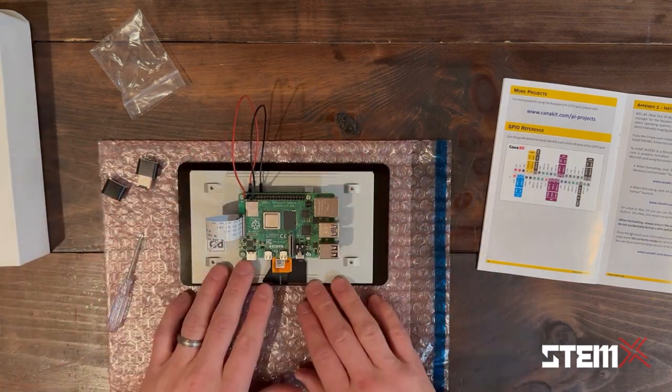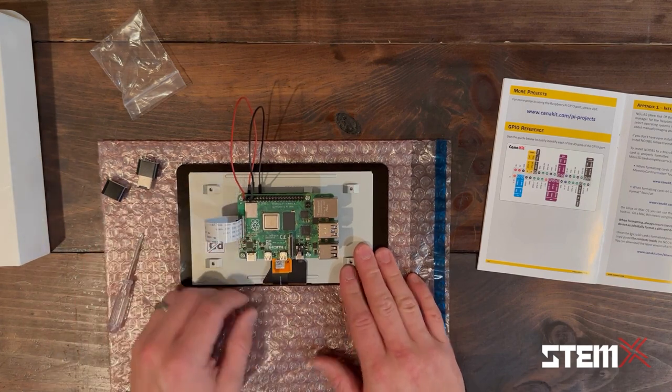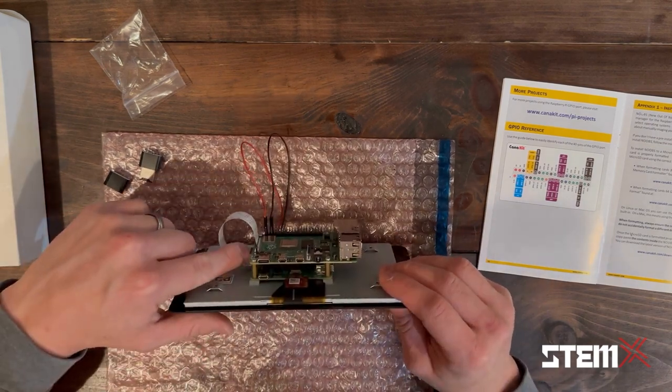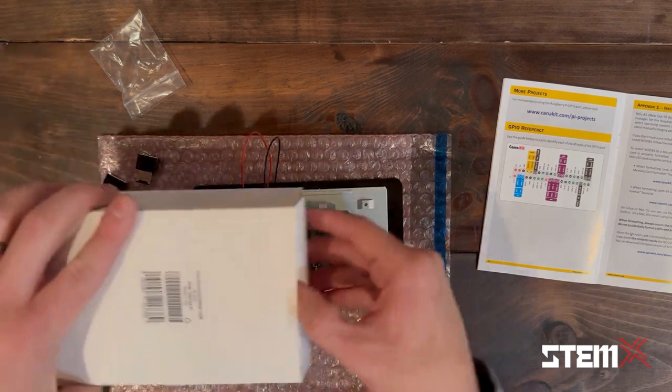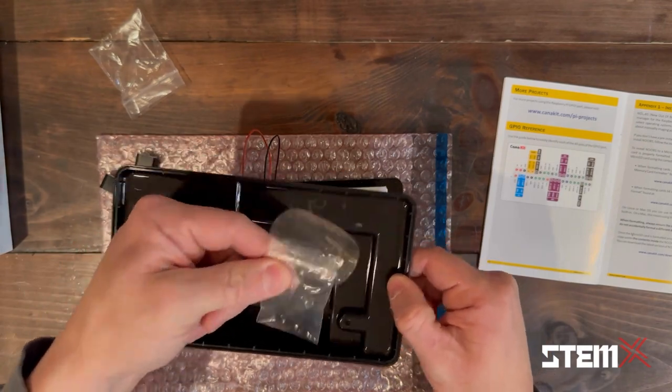So now we have our board mounted to our screen. We have the ribbon cable installed. It's nice and secure. We have the GPIO cables connected. And we also have the SD card installed with our firmware. Next, we're going to remove our protective case with its mounting screws.